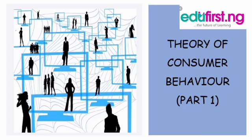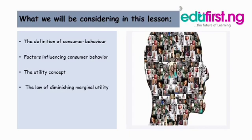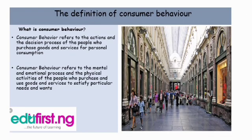Good evening everyone. Today we are looking at an important topic in economics titled Theory of Consumer Behavior Part One. Under this topic we are going to look at different subtopics. Tonight we will look at the definition of consumer behavior, factors influencing consumer behavior, the utility concept, and the law of diminishing marginal utility. Let's start with the definition of consumer behavior.